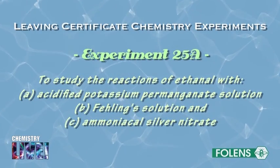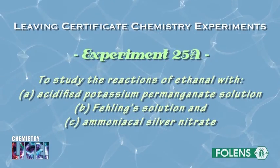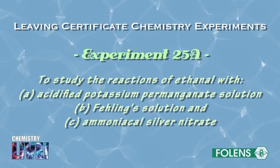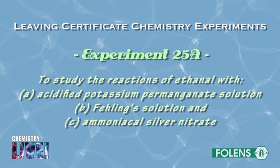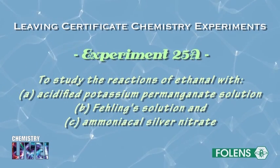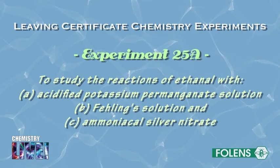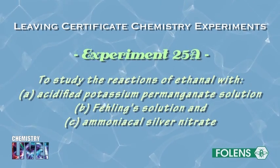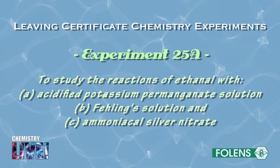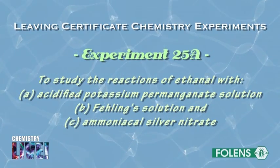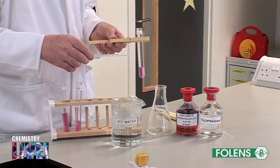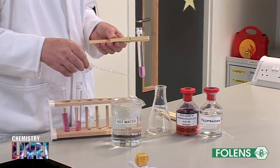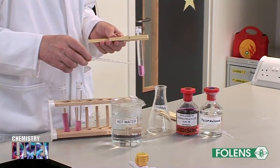To study the reactions of ethanol with: A. acidified potassium permanganate solution, B. Fehling's solution, and C. ammoniacal silver nitrate. In this experiment we will study how ethanol reacts with the compounds listed.